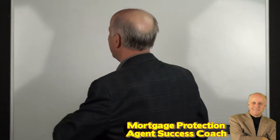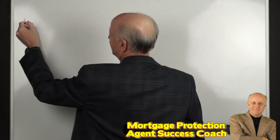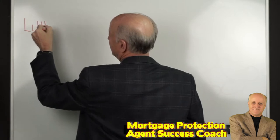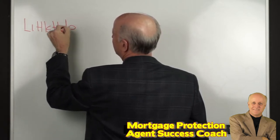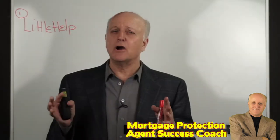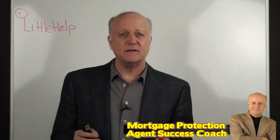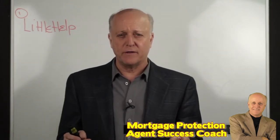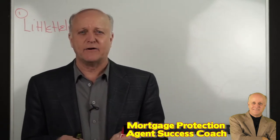The first type is what I call the 'Little Help' IMO. There are organizations that offer just mortgage protection or just final expense, or both. In my opinion, you want to be with an IMO that offers both. The more products they offer, the more opportunity you have to match your prospect's needs with the right product.